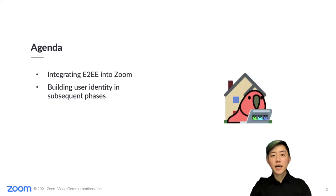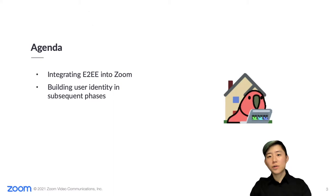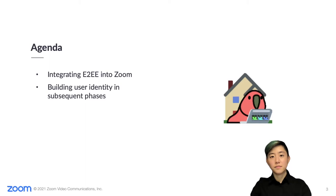I joined Zoom in May with the Keybase team, and I'm one of the engineers who has been working on building end-to-end in Zoom. In this talk, I'll cover two main topics. First, I'll describe how we quickly integrated end-to-end into an existing video conferencing product. Second, I'll explain how we are extending our protocol to support cryptographically defined user identities and secure mechanisms for establishing trust. Users should know who they're talking to, even without having to trust Zoom. After all, end-to-end encryption is only as secure as its ends.